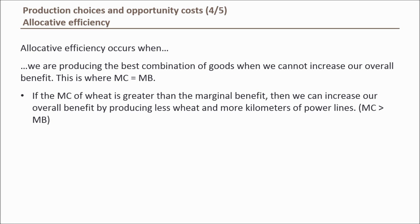When the marginal cost of wheat is greater than the marginal benefit, we can increase our overall benefit by producing less wheat. Another way of thinking about it: when marginal cost is greater than marginal benefit, it means that at that level of wheat production we value power lines more, and therefore we can increase our overall satisfaction by producing more power lines and less wheat.